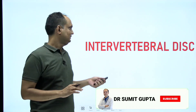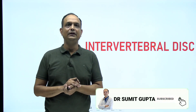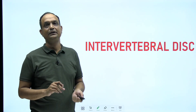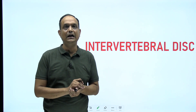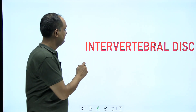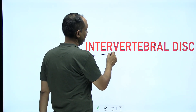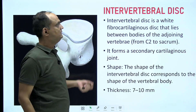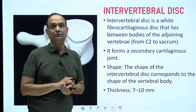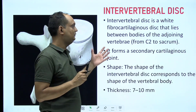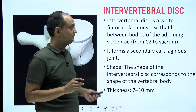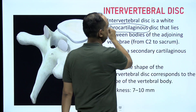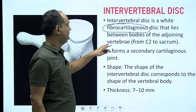Today we'll discuss the intervertebral disc. It is a secondary cartilaginous joint, and as the name suggests, this disc is present between two adjacent vertebral bodies. This disc is made up of fibrocartilage and it lies between the bodies of adjoining vertebrae.